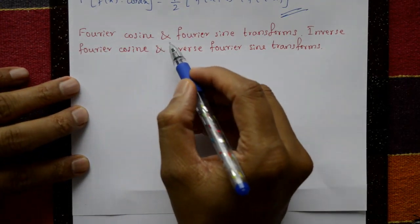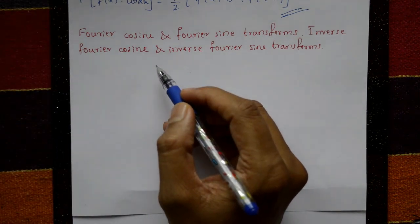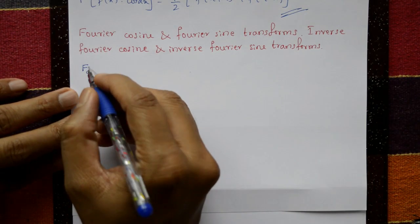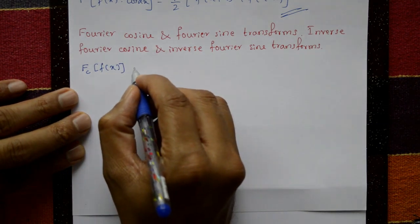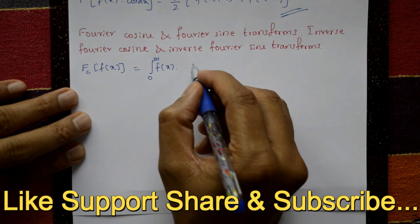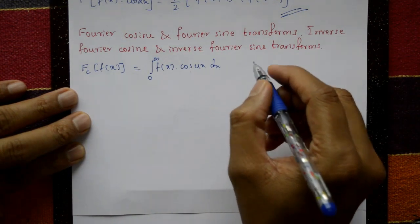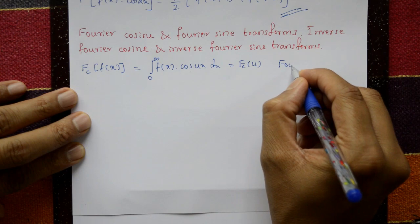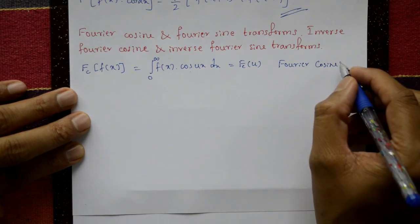Fourier cosine and Fourier sine transforms. The Fourier cosine transform is defined as Fc{f(x)} = integration from 0 to infinity of f(x) cos(ux) dx, and this is called Fc of u.